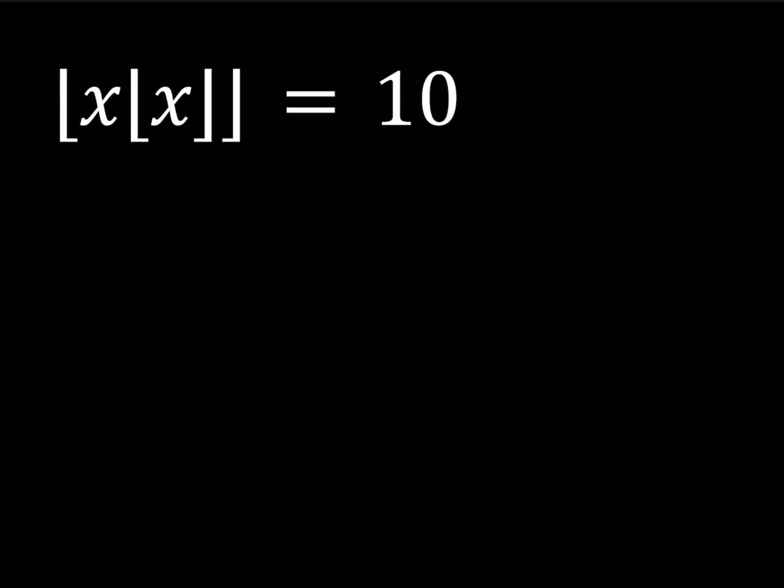Hello everyone, in this video we're going to be solving a floor equation. Let's start with the definition of the floor value. The floor value of x is defined as the greatest integer less than or equal to x. So in a sense, it's rounding down. So if you had the floor value of 3.14, that would be 3.